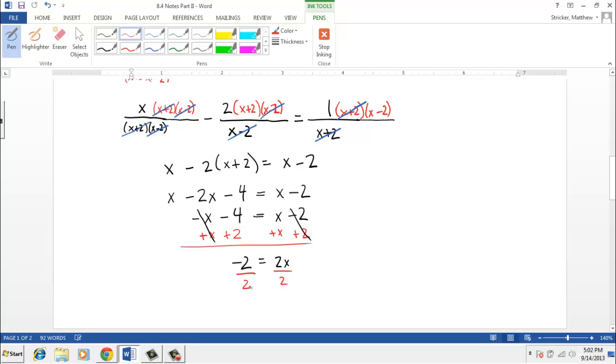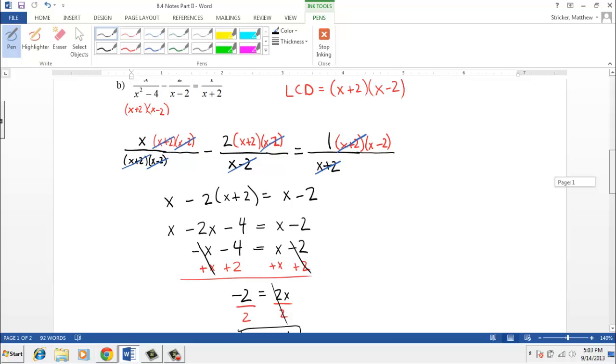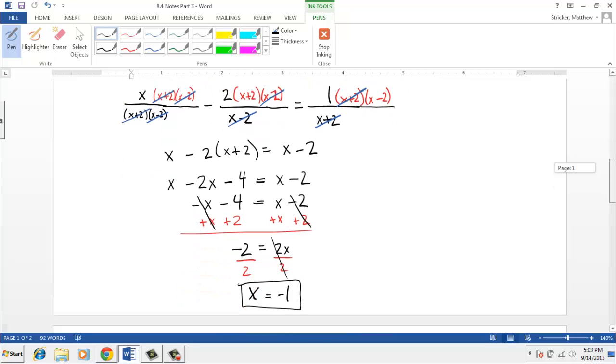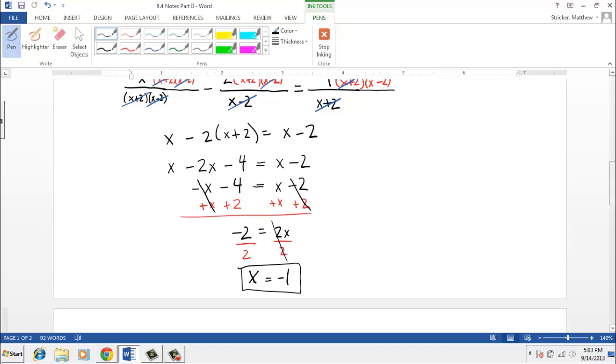Which if we divide both sides by two, we get x equals negative one. And that answer is okay because we couldn't have negative two or positive two, but we got negative one, so that answer is okay.